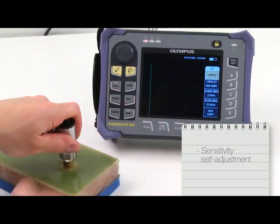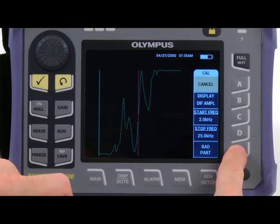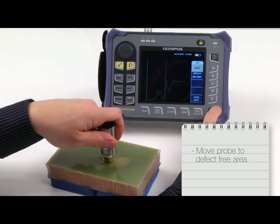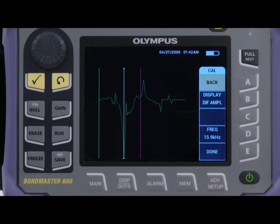While you hold the probe, the instrument will self-adjust its sensitivity. Once you feel the instrument has stabilized, press the BAD PART key. Move the probe onto a defect-free area, hold it there and press the GOOD PART key. Your result should resemble the following screen.